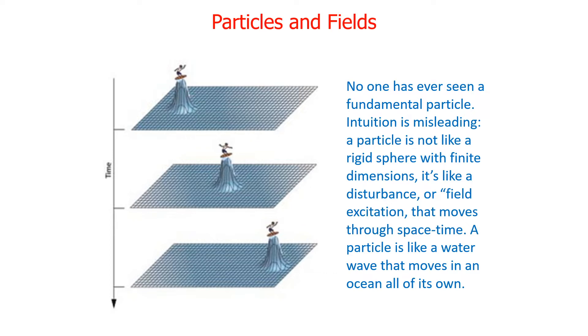Also, no one has ever seen a fundamental particle. These are revealed to us through experiments on microscopic scales far smaller than the eye can see. We have to trust our intuition, because the instruments are just giving us data that we have to interpret. And intuition can be misleading. Again, a particle is not like a rigid sphere. It's like a disturbance, or a field excitation, as a physicist would call it, that moves through space-time. So we can imagine someone surfing on a wave that moves across a body of water. A particle is like a water wave moving in an ocean all of its own.